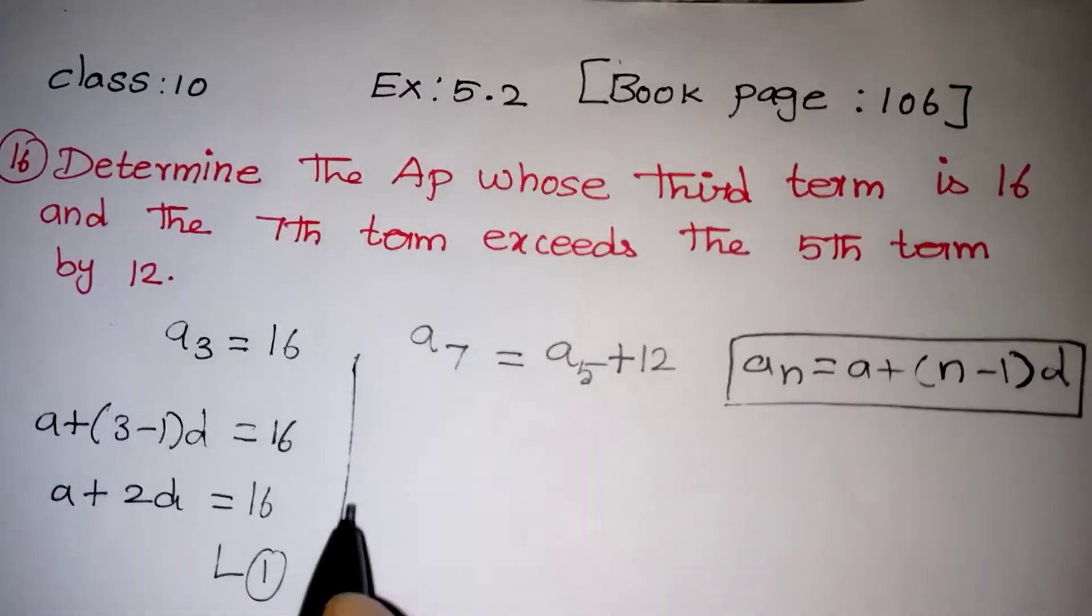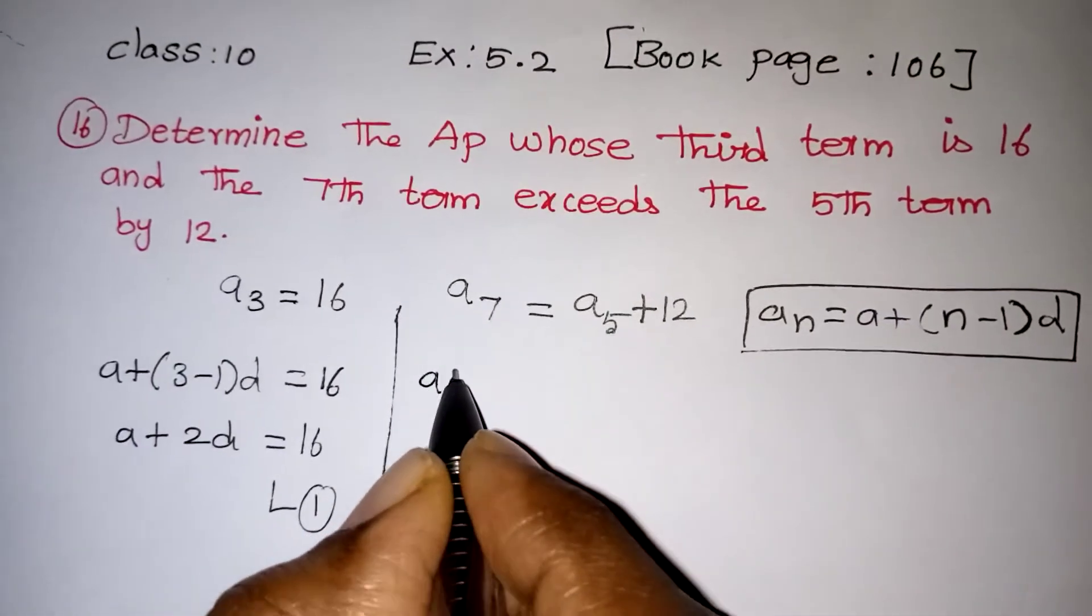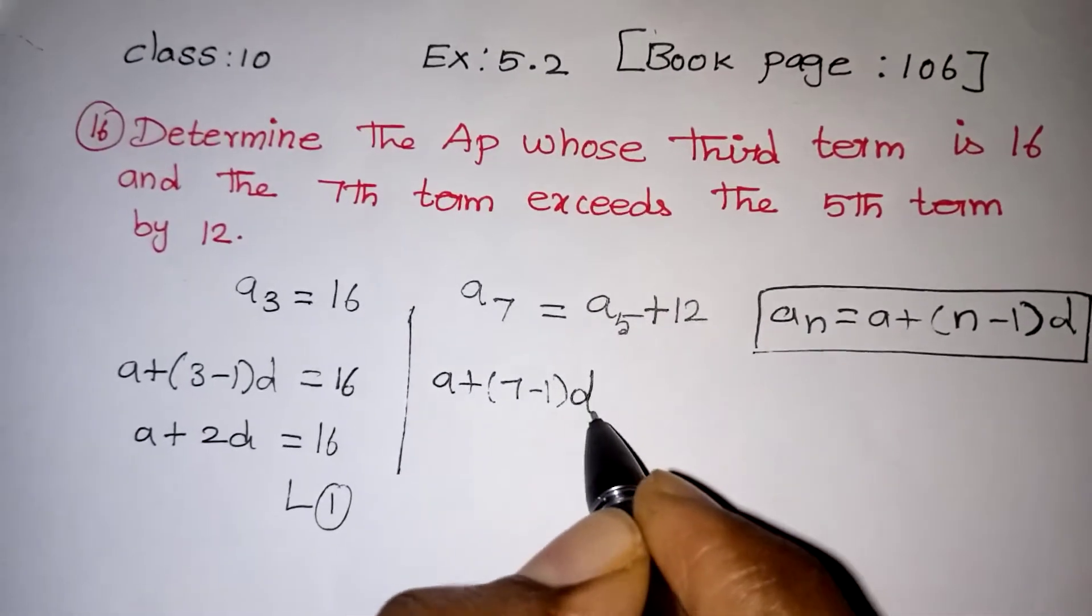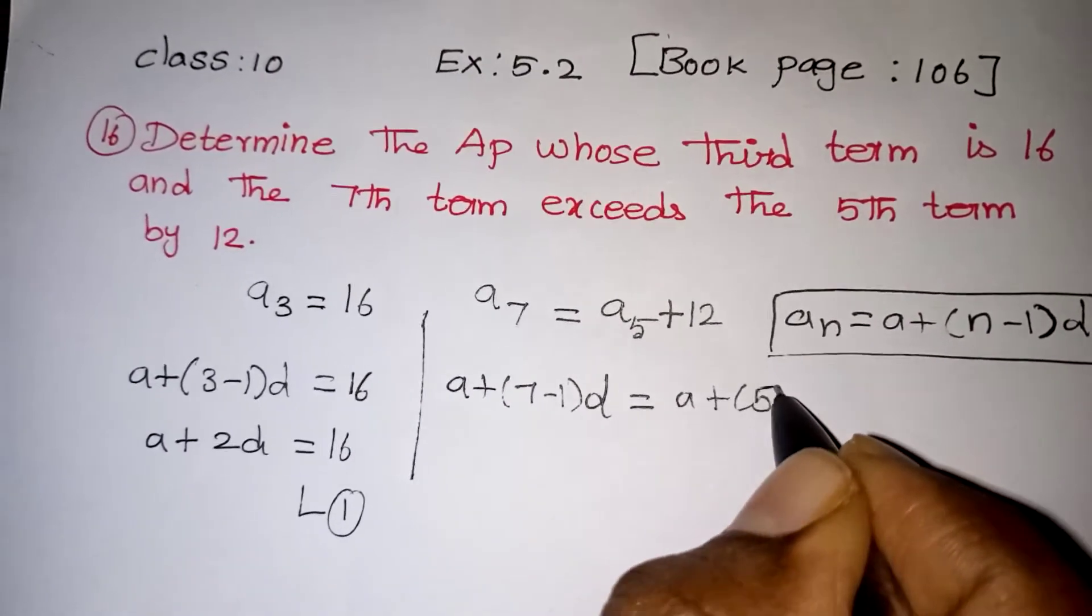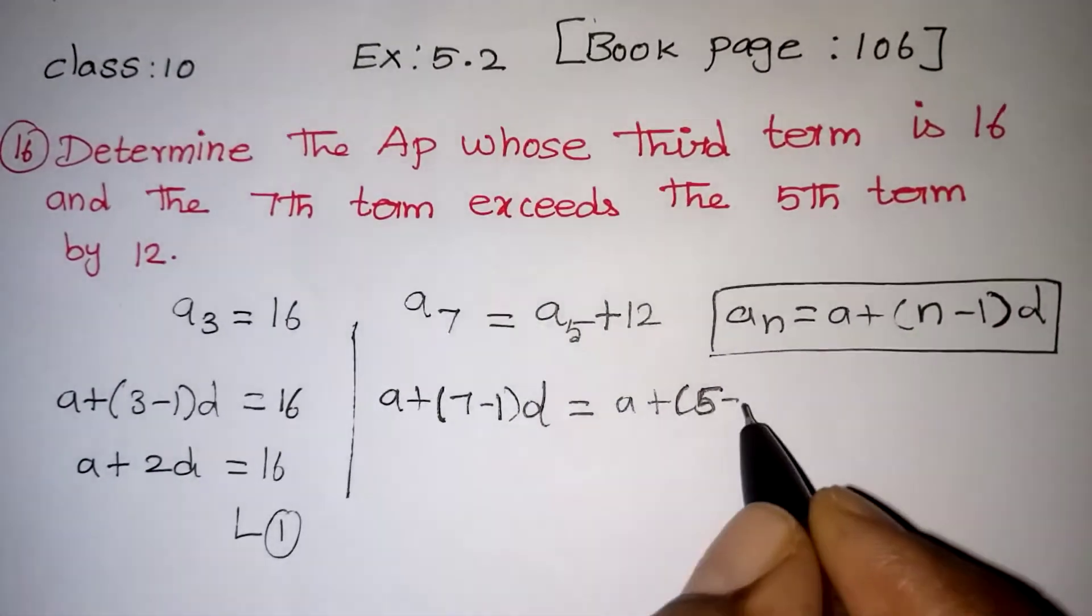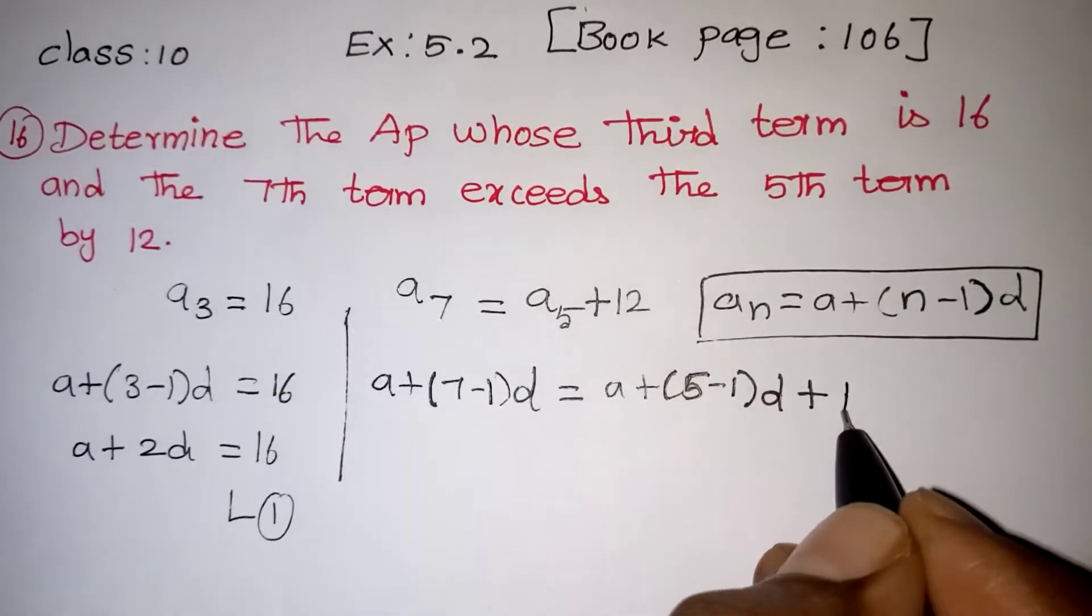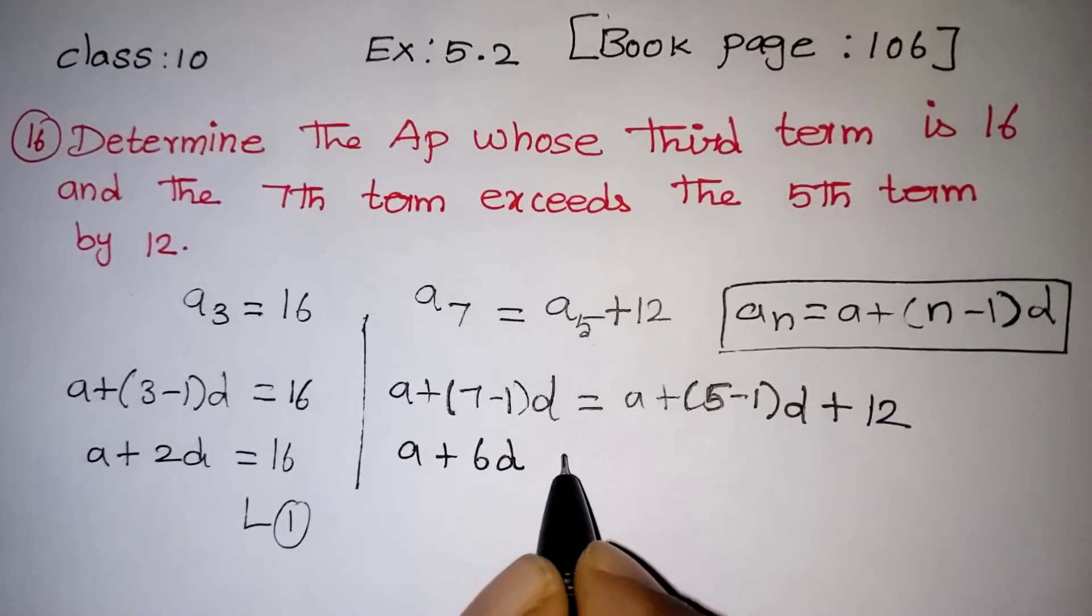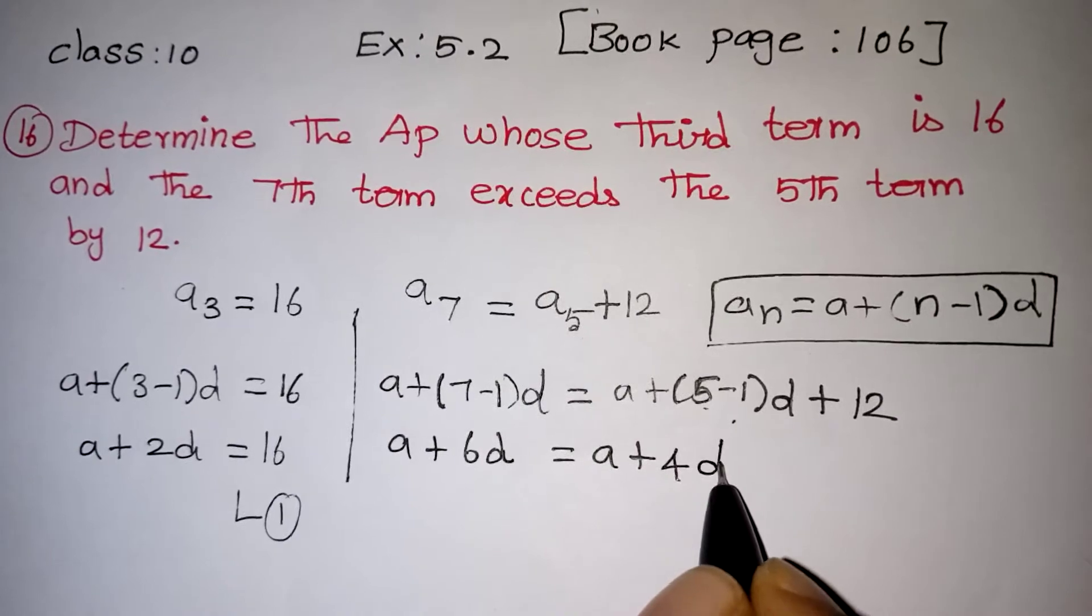The second equation we have to get from A₇. A₇ can be written as A plus (7 minus 1) into D, which equals A₅, written as A plus (5 minus 1) into D plus 12. So this is A plus 6D equals A plus 4D plus 12.